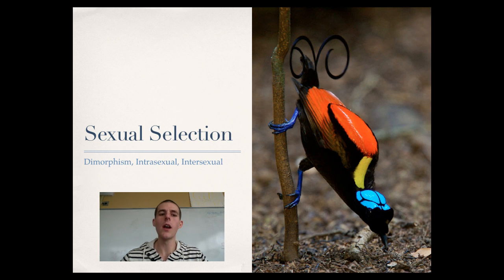Last type of selection I want to talk about is sexual selection. A couple terms: first one is dimorphism. Sexual dimorphism is the situation where one sex of a species looks very different from another sex. This is seen all the time in birds. Right here, we've got a male bird of paradise. The males look all crazy like this with blue and yellow and black and blue feet. The females, they're just pretty drab brown. That would be an example of sexual dimorphism.